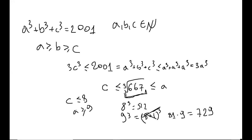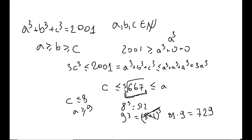Now what can we do with a or c next? Here I invite you to pause for another 5 to 10 minutes and see if you can push the problem further. Well, here's the next step: since b and c are positive integers, we also know that 2001 = a³ + b³ + c³ ≥ a³ + 0 + 0, so a³ ≤ 2001, meaning a ≤ the cube root of 2001.